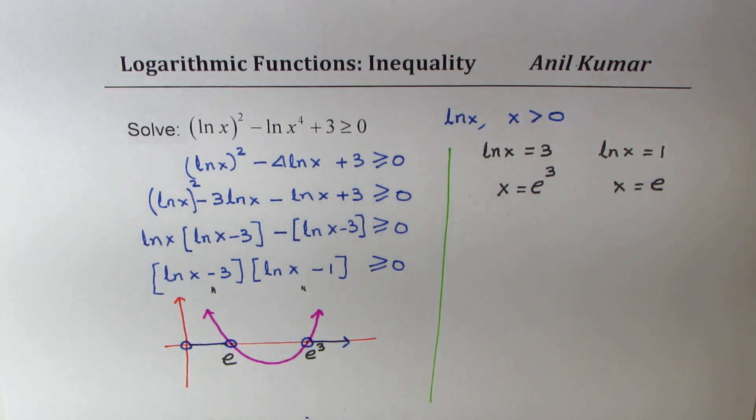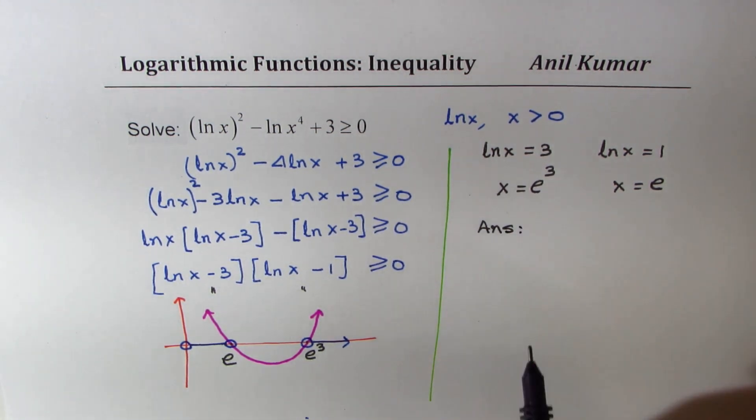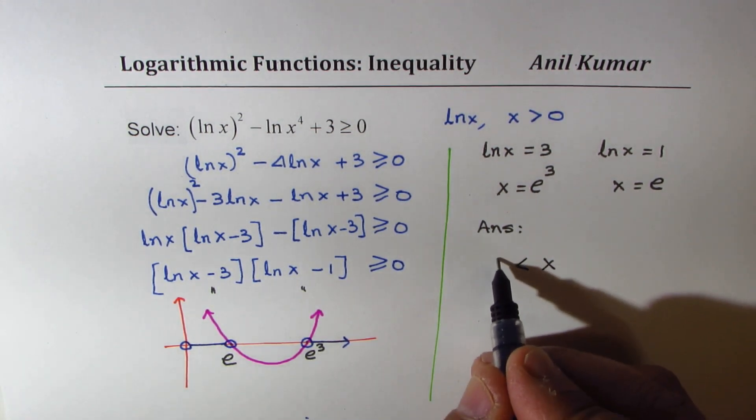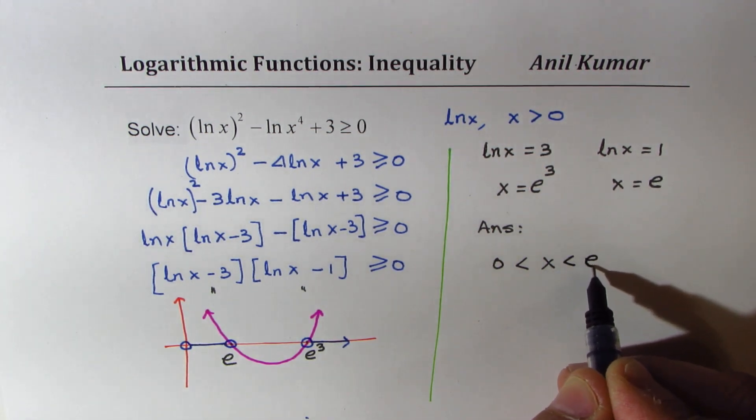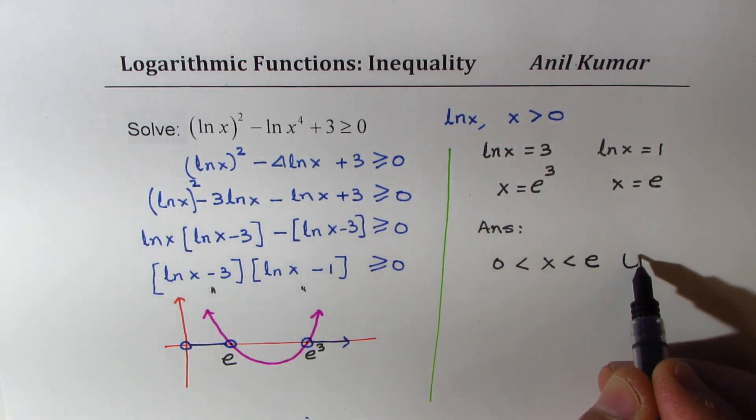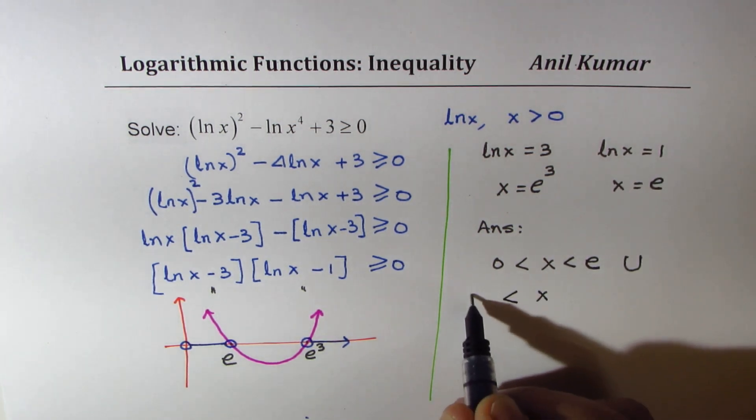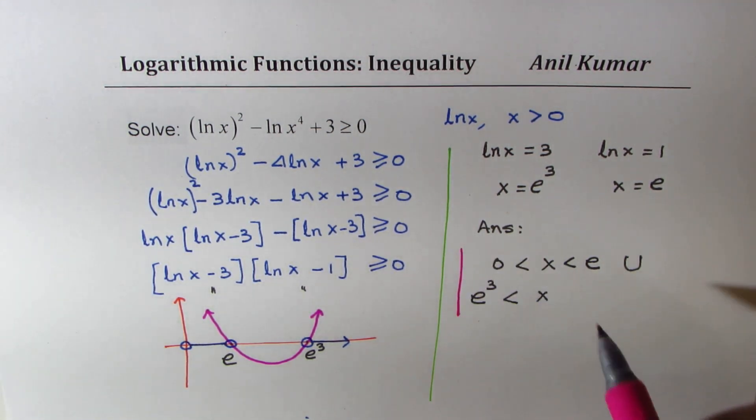So finally we can write down our answer which is x is greater than 0 but less than e, union e cubed is less than x. So that becomes the solution for our question.